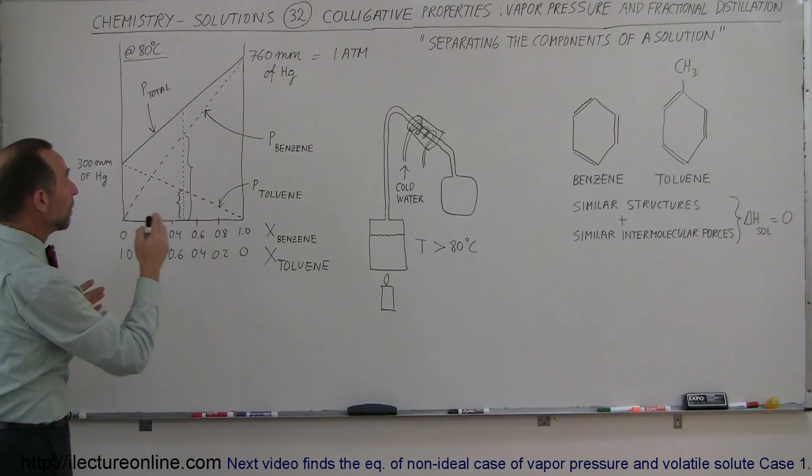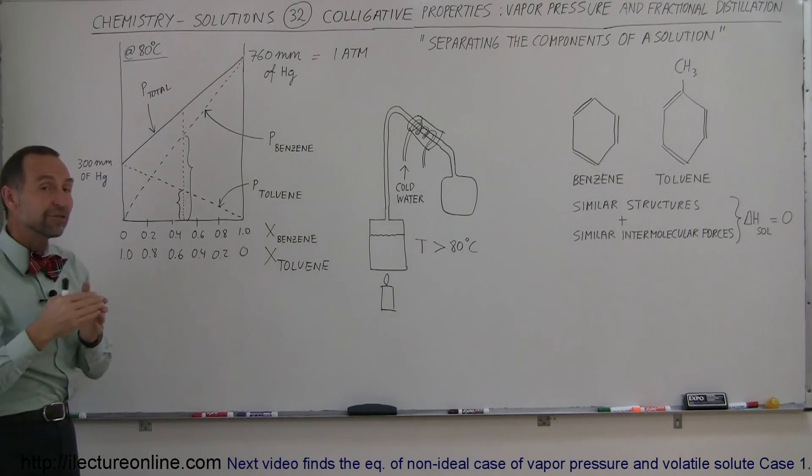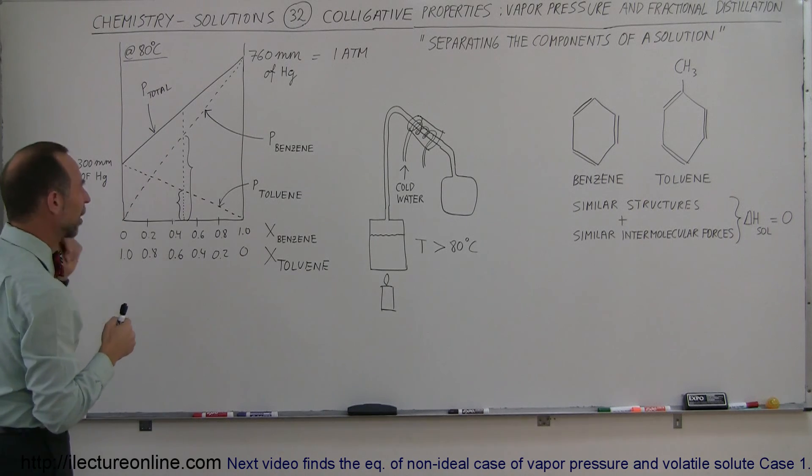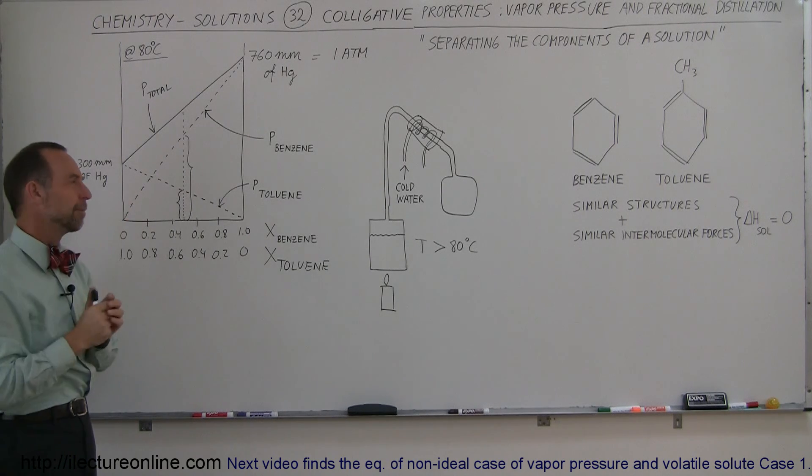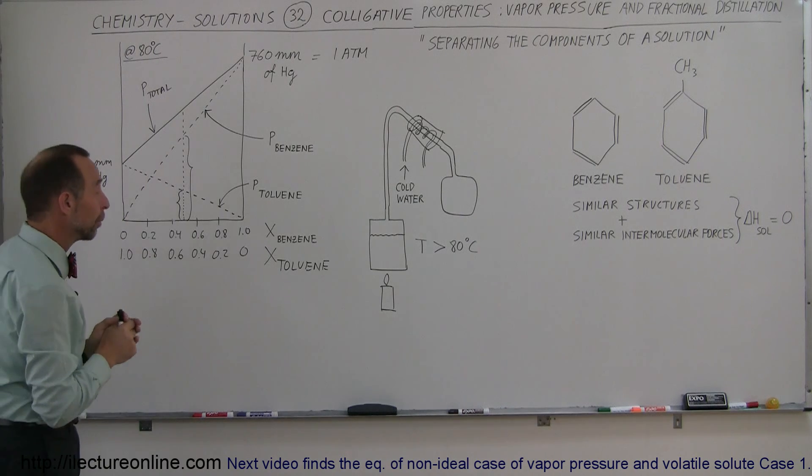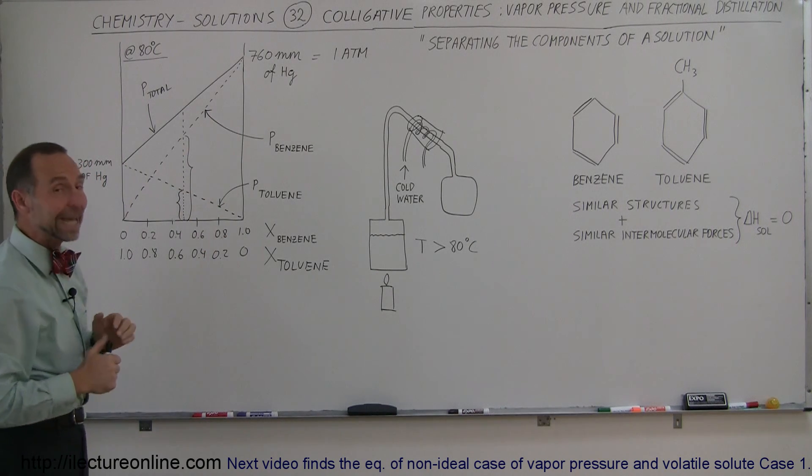The interesting thing is, since benzene and toluene do have different boiling points, the boiling point of toluene is about 110 degrees centigrade, if I remember right. The boiling point of benzene is just over 80 degrees centigrade.